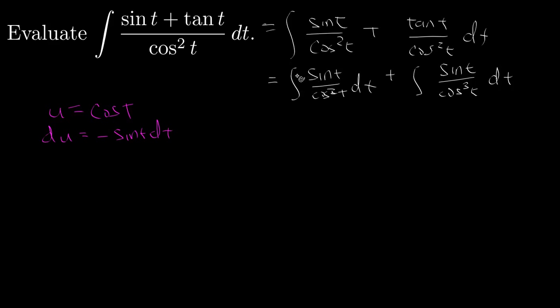We still need a minus sine, so we'll make the adjustments. Multiply minus one times minus one. And now I can rewrite this in terms of my new variable u. I have minus the integral du over u squared, minus the integral du over u cubed.